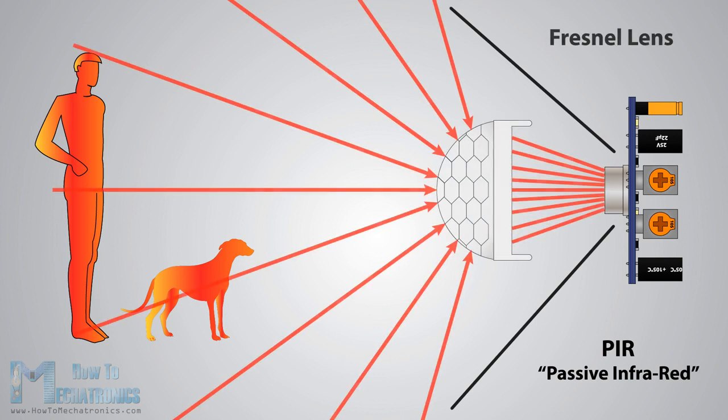The module also consists of a specially designed cover, named Fresnel lens, which focuses the infrared signals onto the pyroelectric sensor.